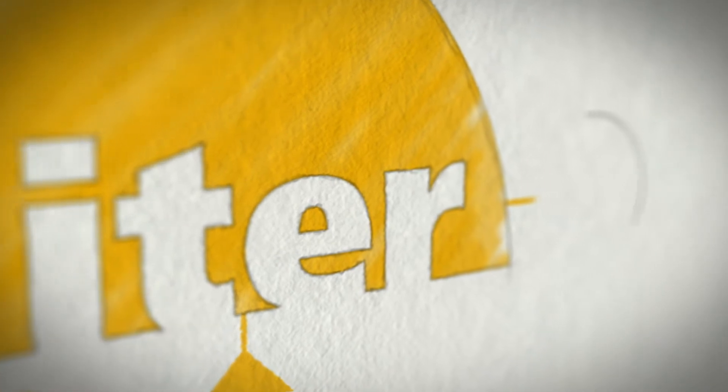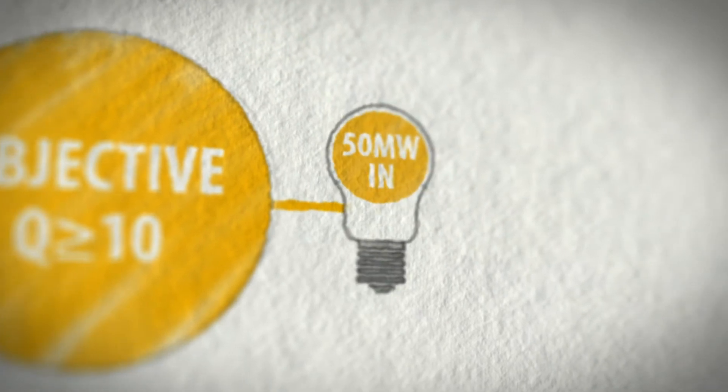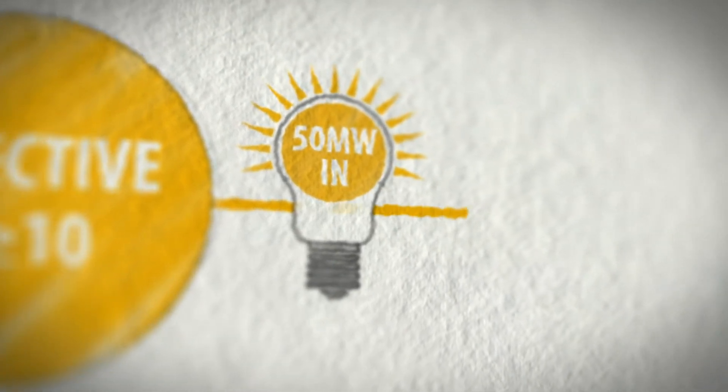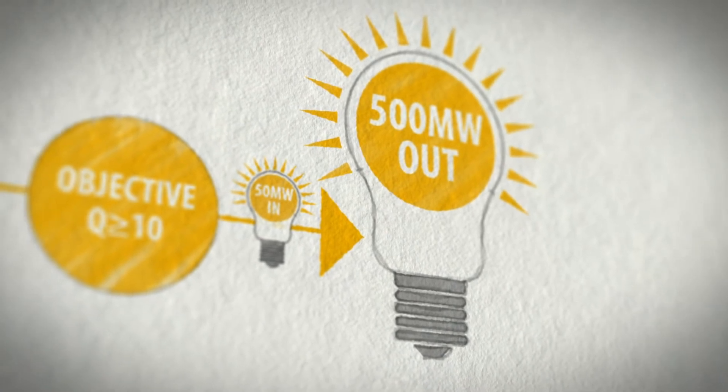The goal of ITER can be summed up by a simple equation: Q is greater than or equal to 10. From 50 megawatts input power, ITER will generate 10 times the output power, or 500 megawatts of thermal energy.